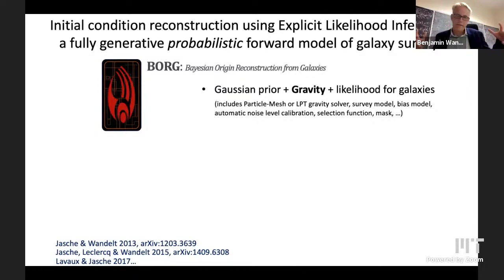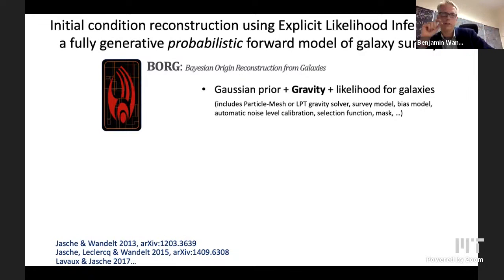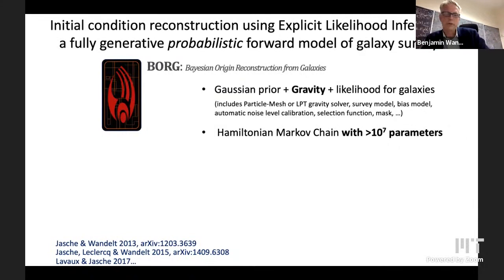We have gravity in our model — not just linear theory, but actually gravitational evolution from the initial conditions. Once we have a final non-linearly evolved density field, we relate that to numbers of galaxies that might be observed at some point in the universe, some direction in the sky at some redshift in a redshift survey, through a likelihood that is explicit. We also model the observations for a particular survey: selection function, mask, noise calibration, bias model, etc.